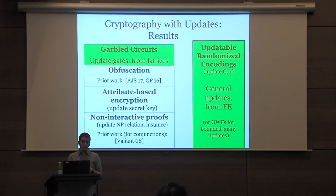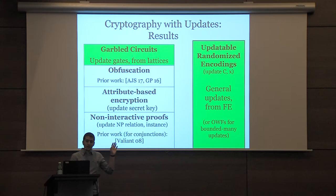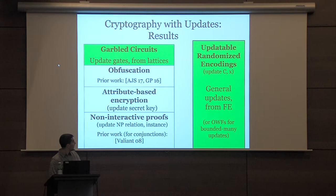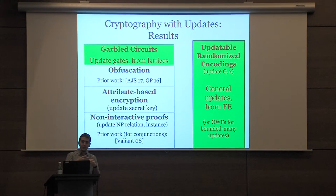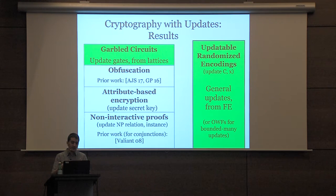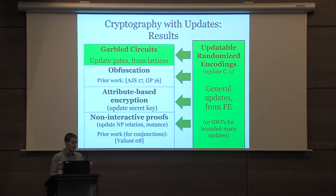Moreover, we study another notion — which we call updatable randomizing codings. We can do updatable randomizing codings for an even larger class of updates from functional encryption. And if you only want to update a bounded number of times, say 100 times instead of unboundedly many, we can do it from one-way functions. Lastly, we show that updatable randomizing codings suffice for all the applications — for example, given attribute-based encryption and updatable randomizing codings, you can get updatable attribute-based encryption.